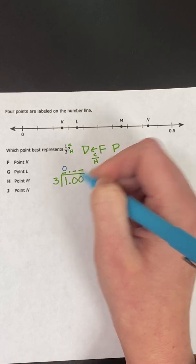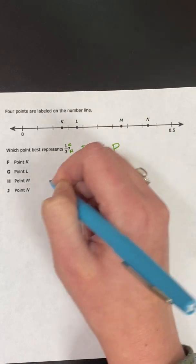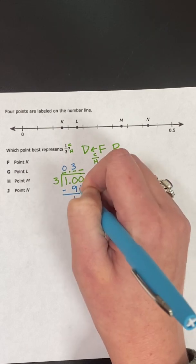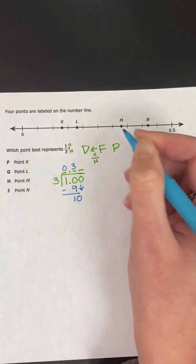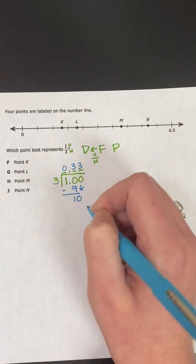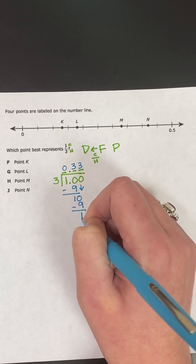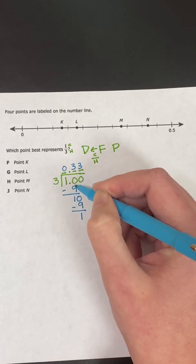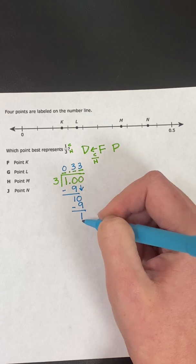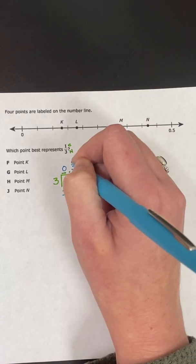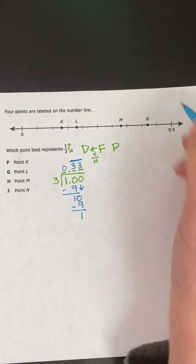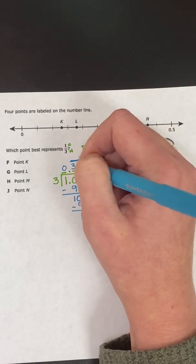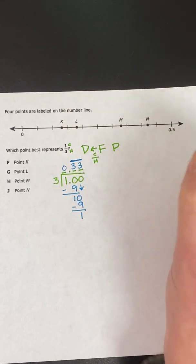Three does go into ten three times. Three times three is nine. Subtract to get one, bring down. Three goes into ten three times again, I get nine. And I get another one. So we realize here it's going to be the same thing over again. So that's what we call a repeating decimal. So one third as a decimal is zero point three three.